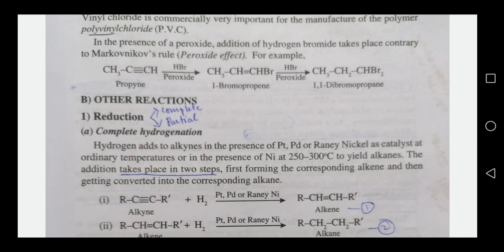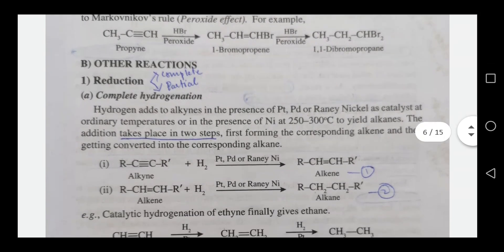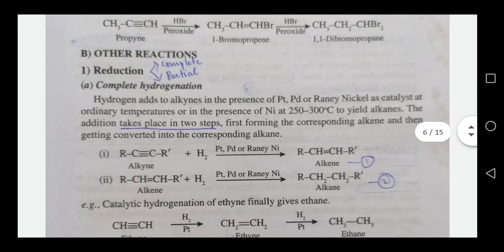The next reaction is reduction. There are two types: complete reduction and partial reduction. In complete reduction, we use alkyne with hydrogen gas in the presence of catalysts such as platinum, palladium, or Raney nickel to give an alkane.